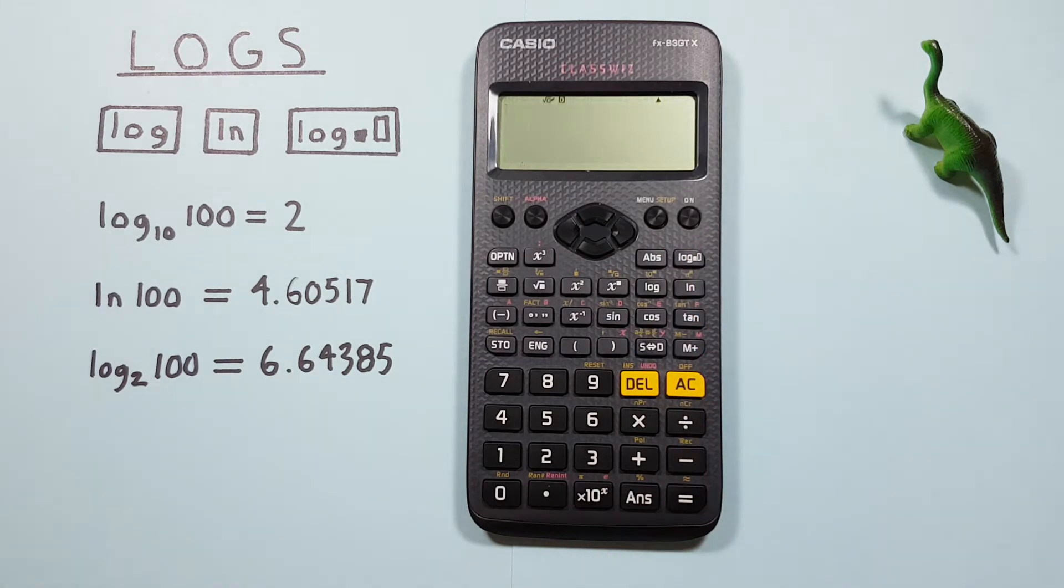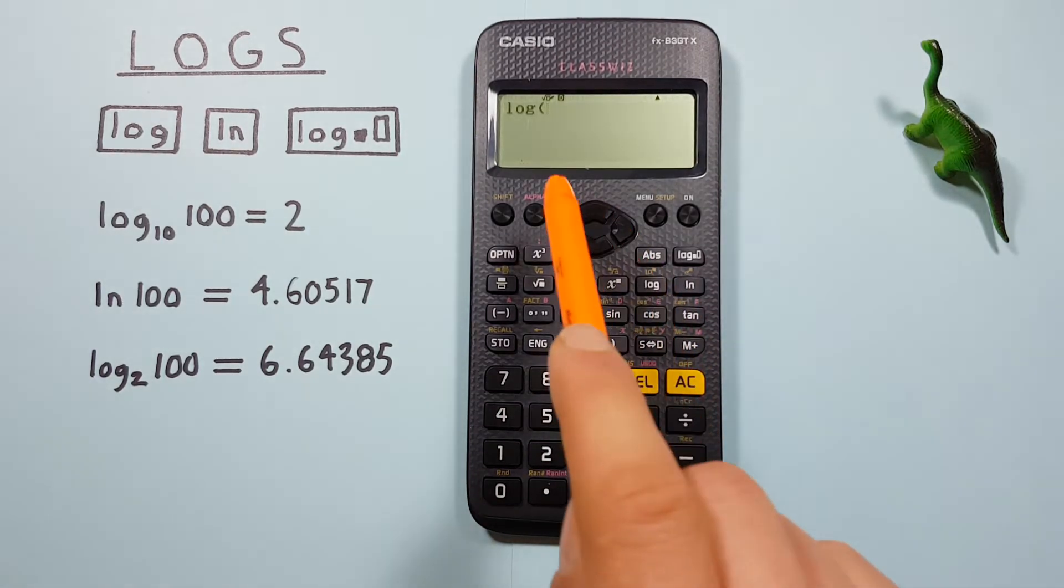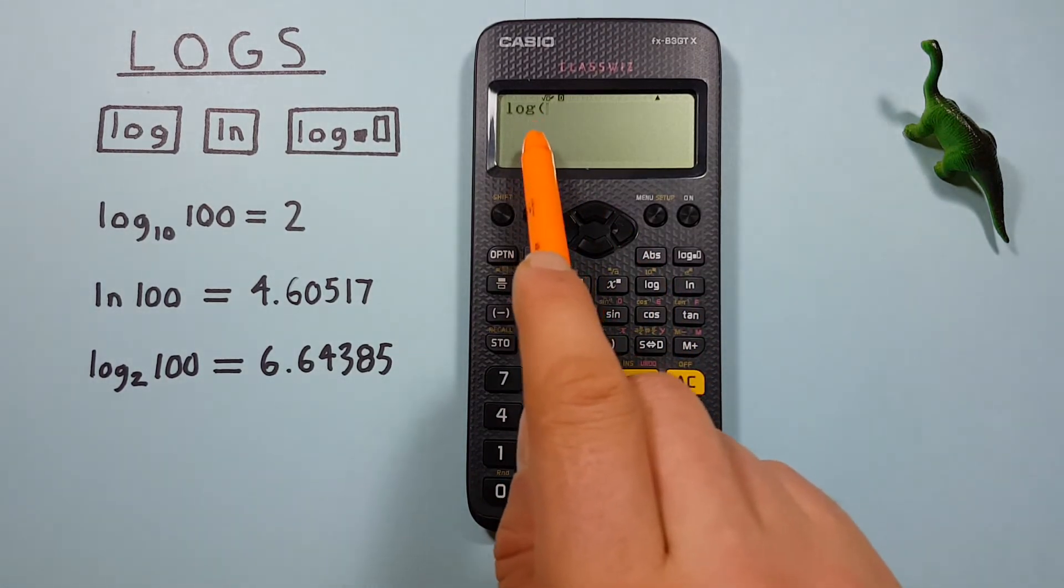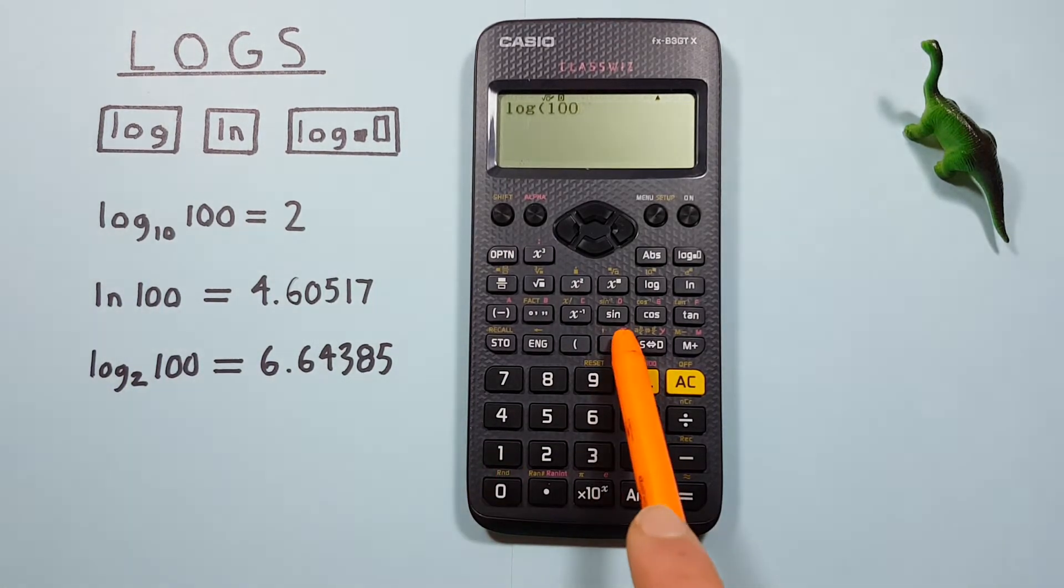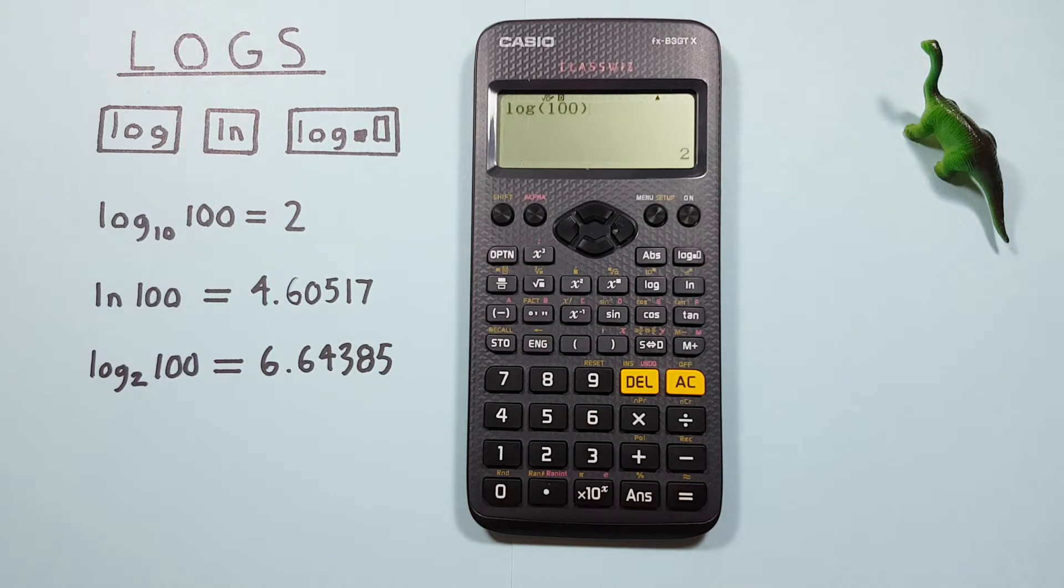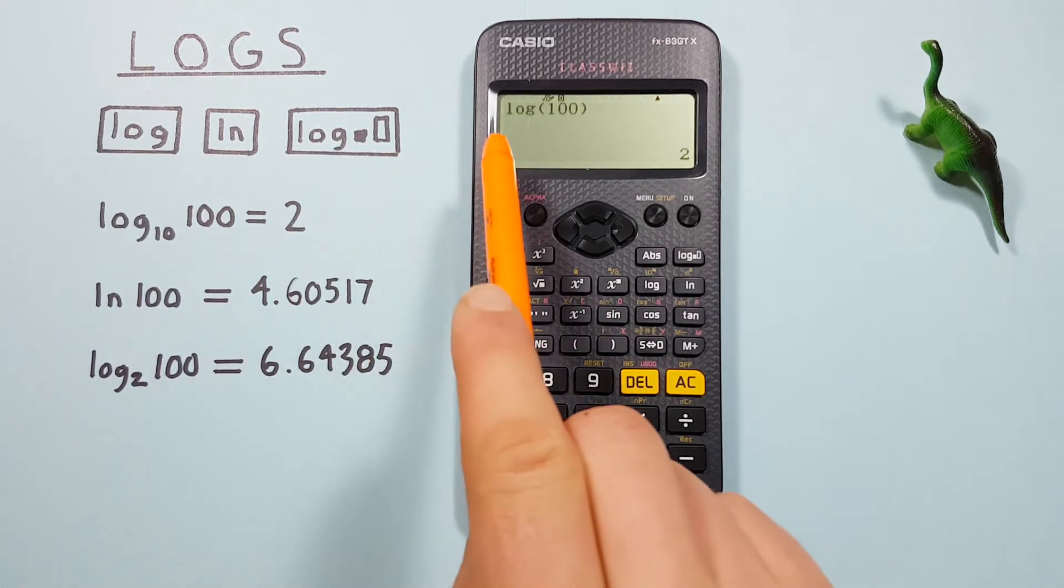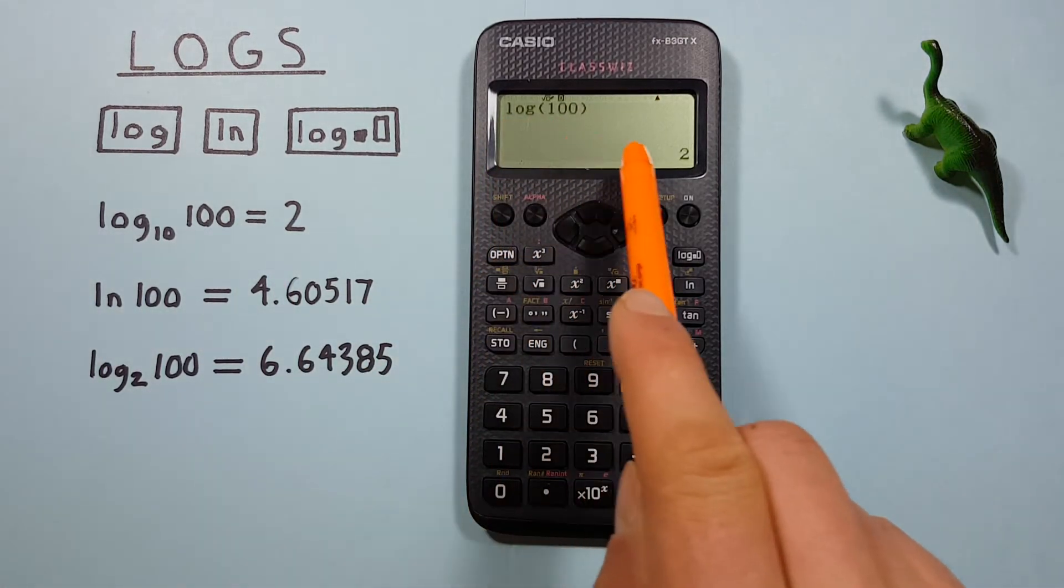Getting started, our standard log is a log base 10. So if we wanted to solve log base 10 of 100, all we would have to do is press the log key, and you don't see a base, but there is a 10 in there, and then we enter our 100, close our bracket, and press equals. And we see this gives us a result of log of 100 is equal to 2.